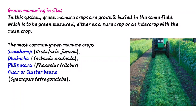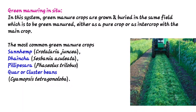Some examples of green manure in situ: sun hemp (scientific name Crotalaria juncea), dhaincha (Sesbania aculeata), Philipposera, and guar or cluster bean (Cyamopsis tetragonoloba). These are some examples of green manures in situ.